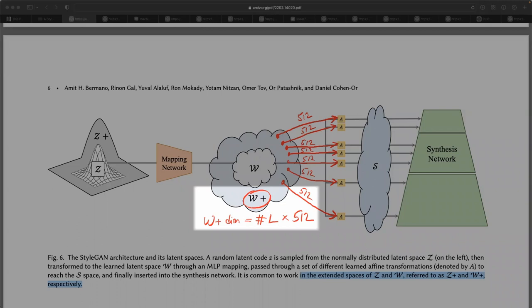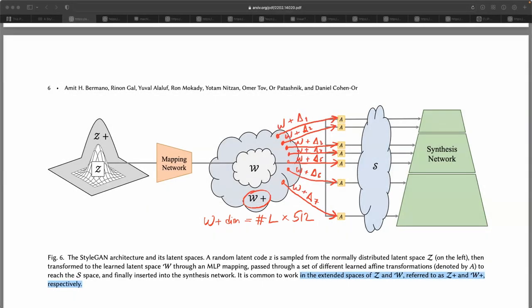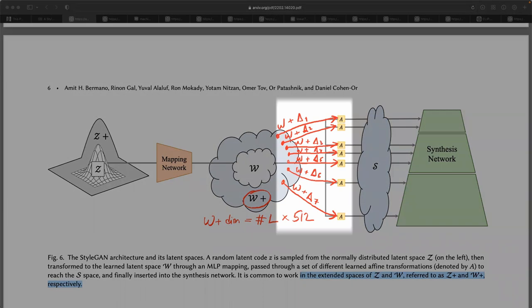Extended space W+ means that we fit unique 512-dimensional vectors into every layer of the StyleGAN generator. Thus, the dimensionality of W+ space is equal to the number of layers times 512. Usually, these unique vectors from W+ space are just small modifications of a single vector from W space plus some unique data for every layer.